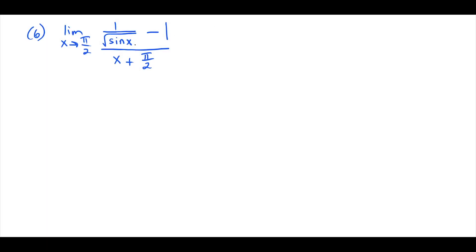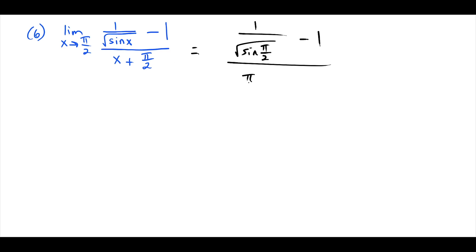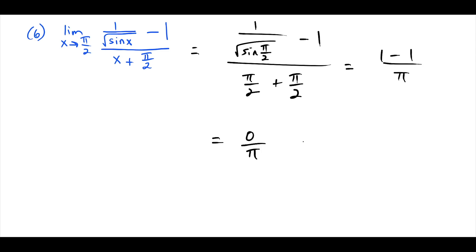For the last example, this looks complicated but you should absolutely try plugging in first. A common mistake is jumping straight into conjugating and making it much more complex. All you do is plug in: we get 1 over sine of pi/2 minus 1 over (pi/2 plus pi/2). Sine of pi/2 is 1, so 1/1 is 1 minus 1 over pi. That gives 0 over pi, which is just 0. That's our final answer.